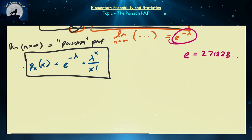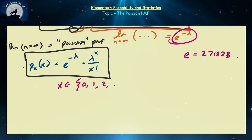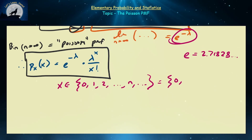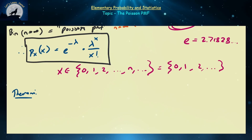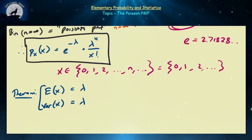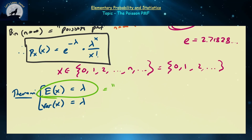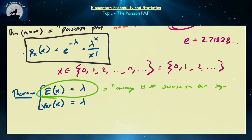The primary difference between Poisson and binomial is that x, the number of successes, now ranges from 0, 1, 2, all the way to infinity — no upper bound. An important property: the expected value of x equals lambda, and the variance of Poisson random variables also equals lambda. This lambda represents the average number of successes in our sequence.